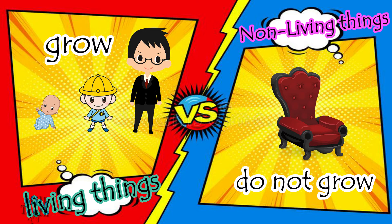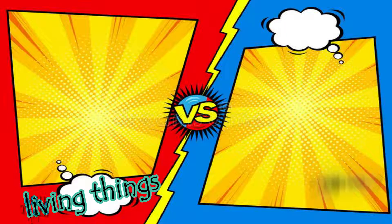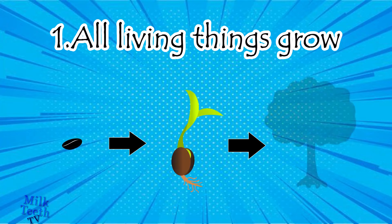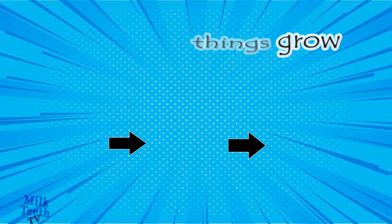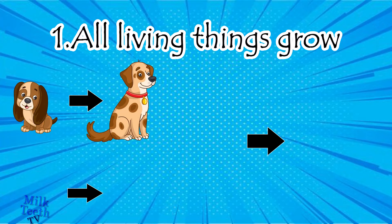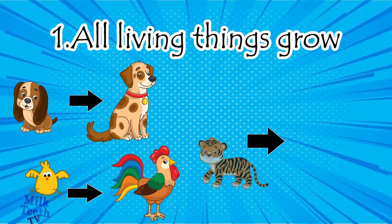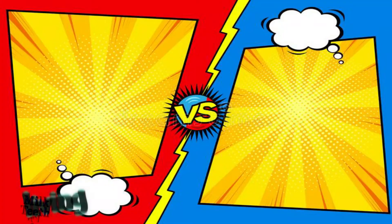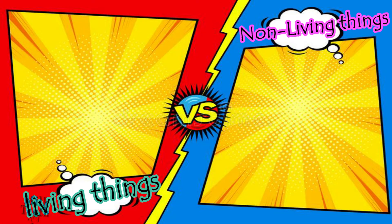All living things grow — not only humans. Plants, for example: a small seed grows into a seedling and then into a big tree. Small pups grow into big dogs, small chicks grow into hens and roosters, and small cubs grow into adult tigers.